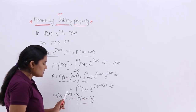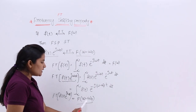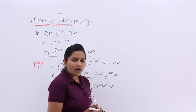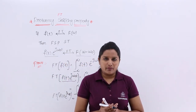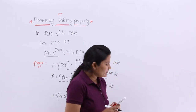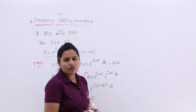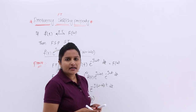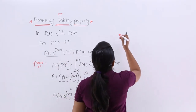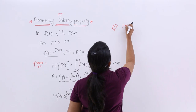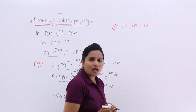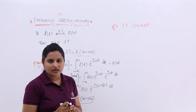For example, if you consider e^(-jω₀t) instead, then you will get F(ω + ω₀). This is the frequency shifting property. Now it is also very important to know where we can apply this property. For example, if you are asked to find the Fourier transform of cos(ω₀t), how will you find it?